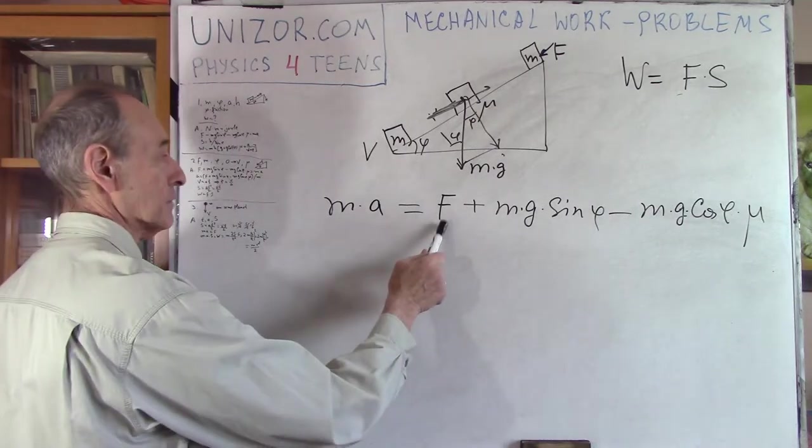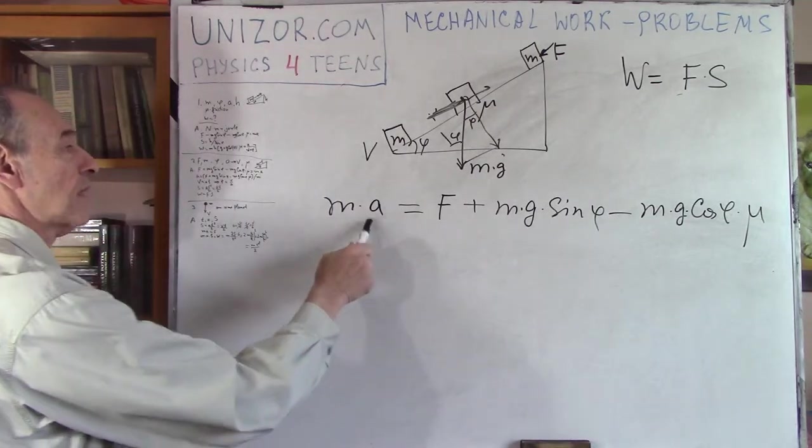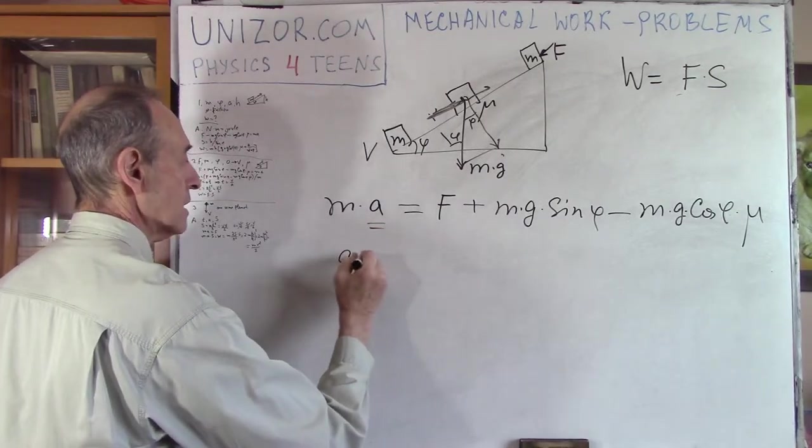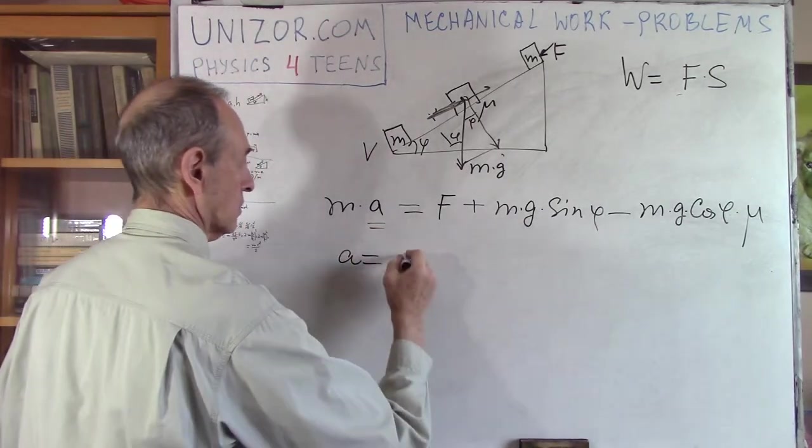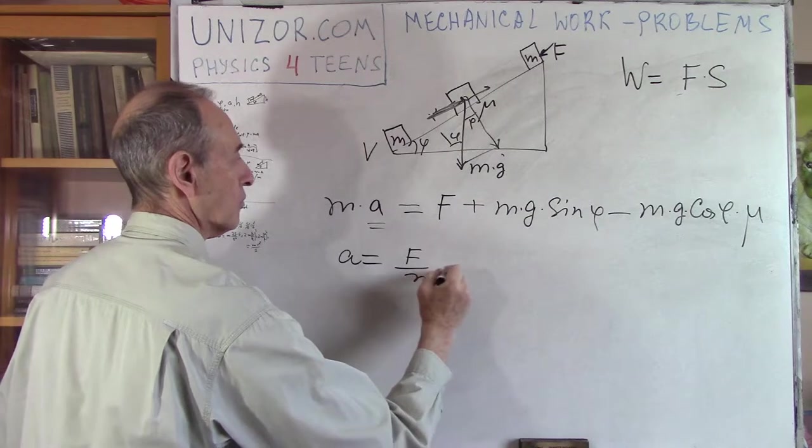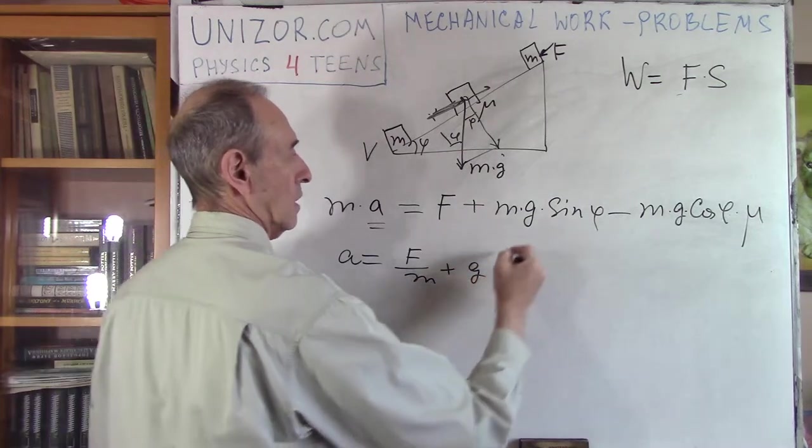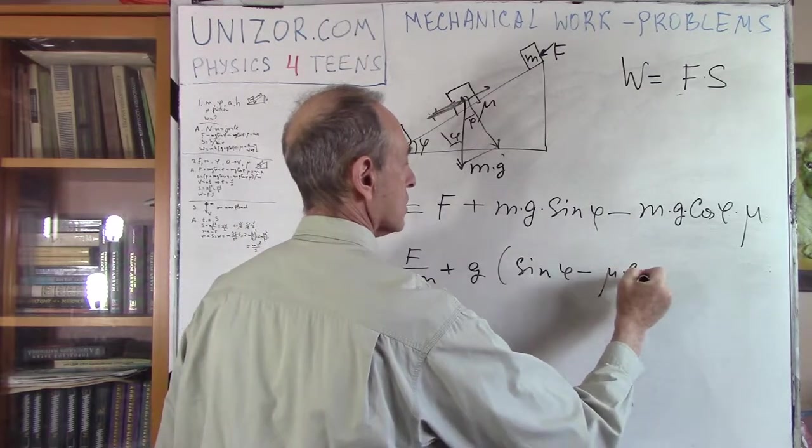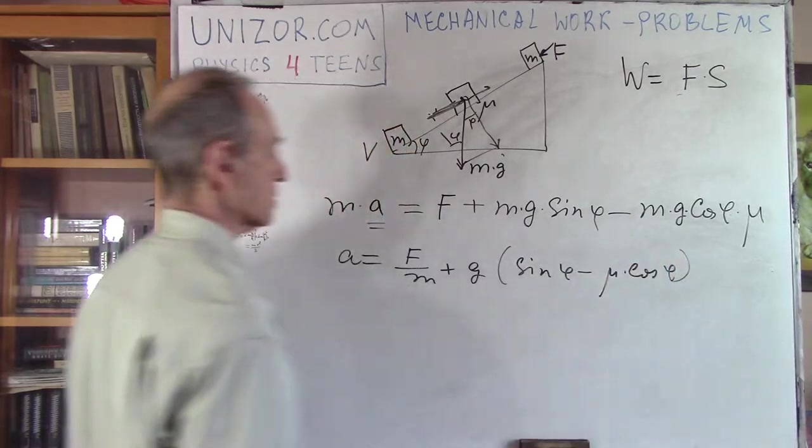So, in this case, my force of gravity, well, more precisely, component of the force of gravity, helps us. Another component of the gravity, which is the friction, that actually also, as in the previous problem, goes against our movement. Now, in this case, we know f, which means we can find out a. So, a is equal to f divided by m plus g sine phi minus mu cosine phi.